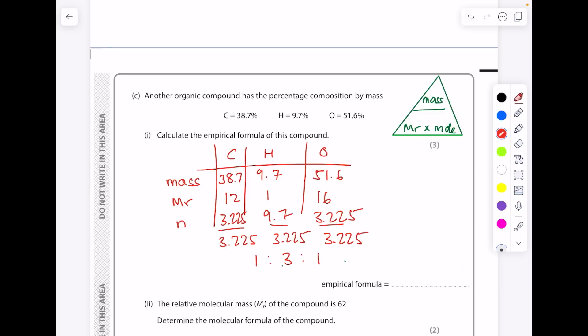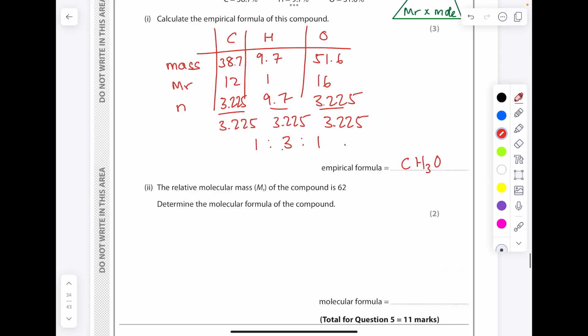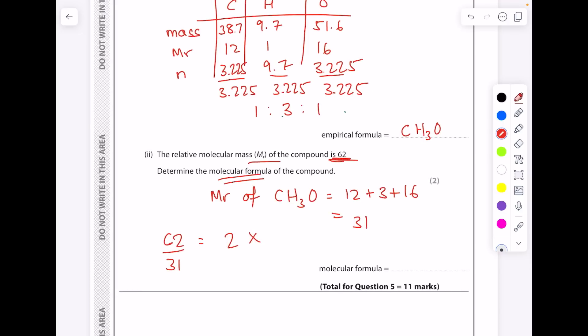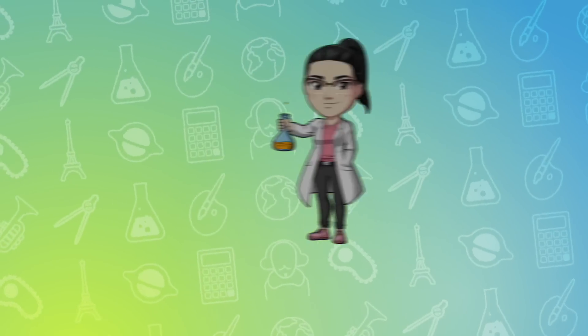So our final answer here, don't forget to write it as CH3O. And then just to show you what to do, if they ask you to find the relative molecular mass, they've told us it's 62. All you have to do is find the MR of what you just worked out, which is 31, and then just divide the number they've given you by that MR to get 2. So your molecular formula, because remember that's the actual number of atoms of each element present, will just be 2 lots of this. So our final answer is C2H6O2.